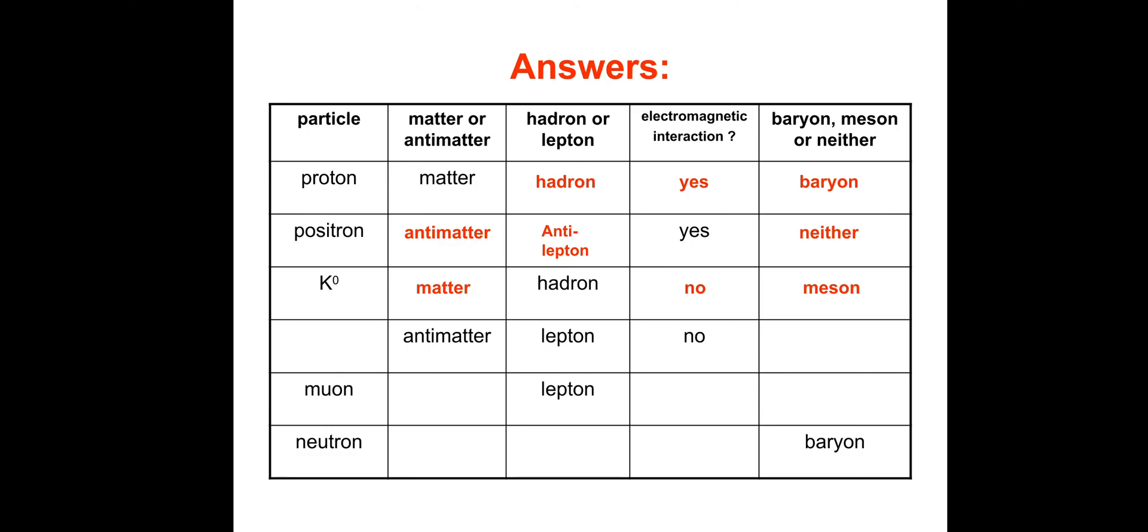Anti-neutrino: If it's antimatter, not subject to electromagnetic interaction, and it's a lepton, it must be an anti-neutrino. The other particle could have been an anti-neutron, but an anti-neutron is a hadron, so it can't be that. Baryon, meson, or neither? Neither, because it's a lepton or anti-lepton.